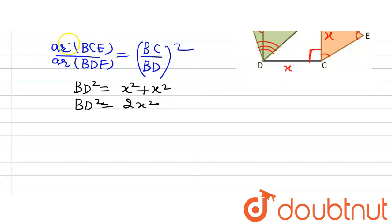So I can write area BCE divided by area BDF is equal to BC that is X square divided by BD square. So here we have found out to be 2X square. Now when we will divide it we will get 1 divided by 2.